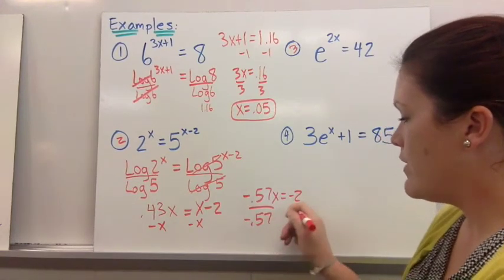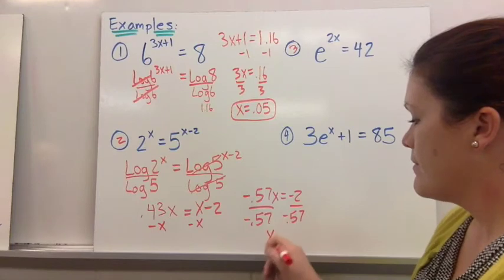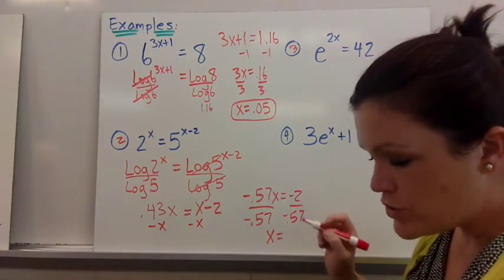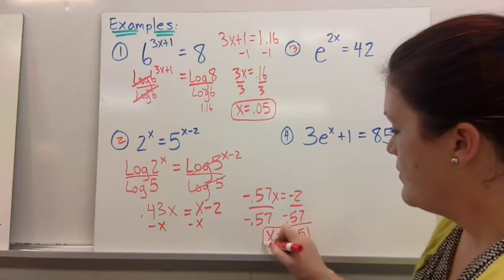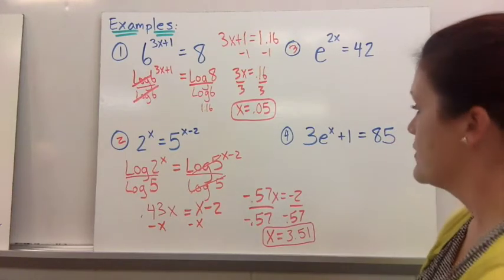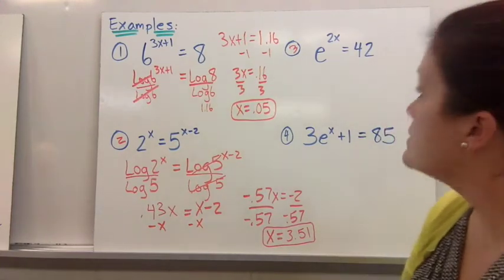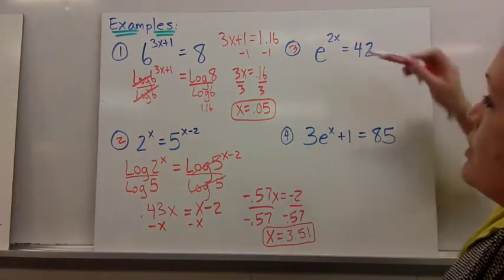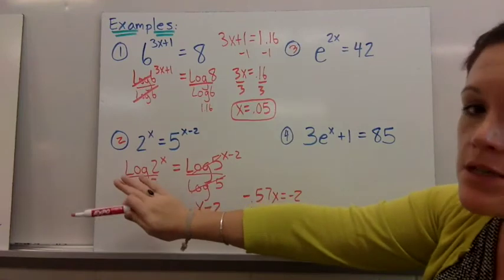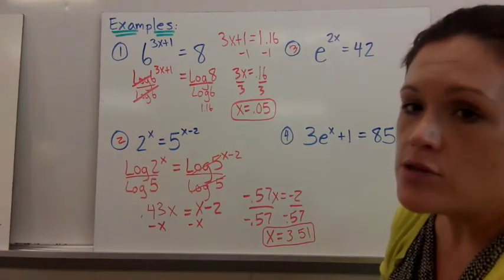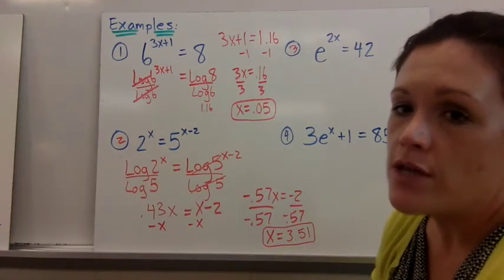And again I'm just rounding to the hundredths place. So now let's look at 3 and 4. So the main idea over there is you put log on both sides divide in order to clean up those logs and then solve the equation left over.